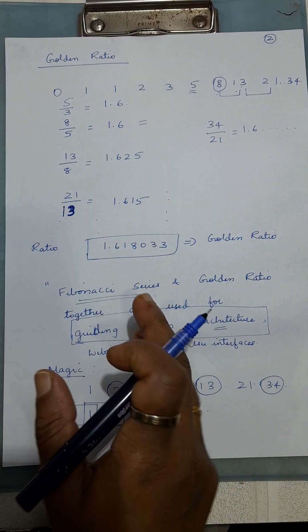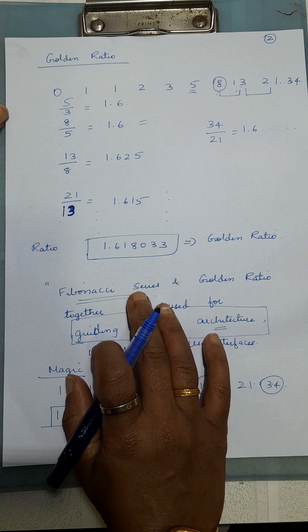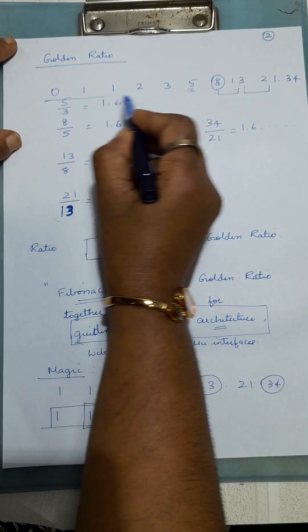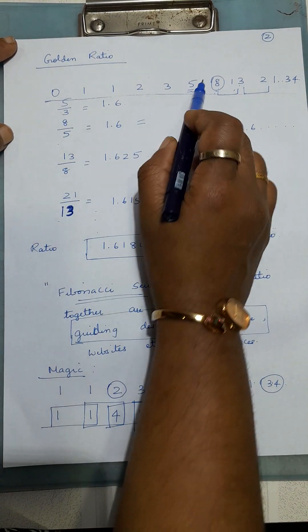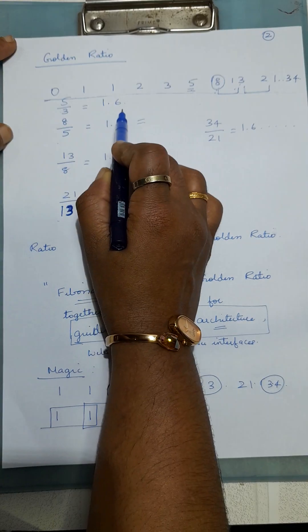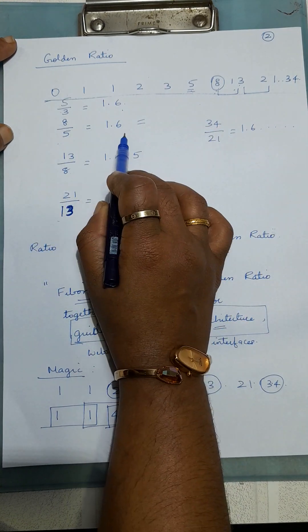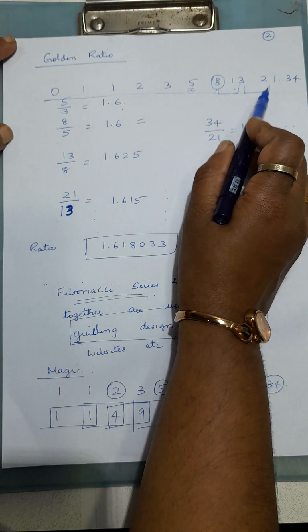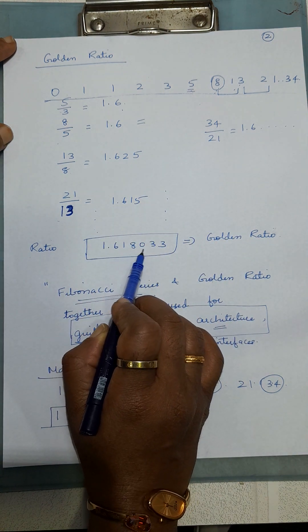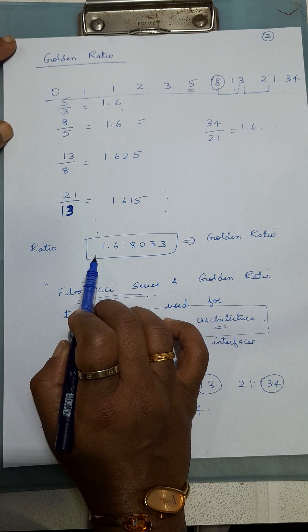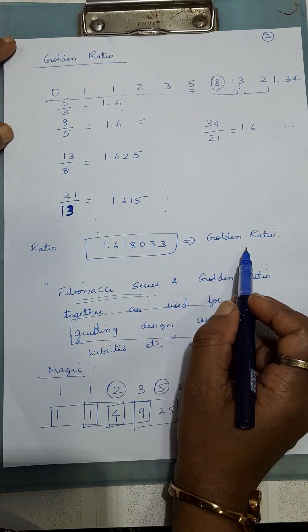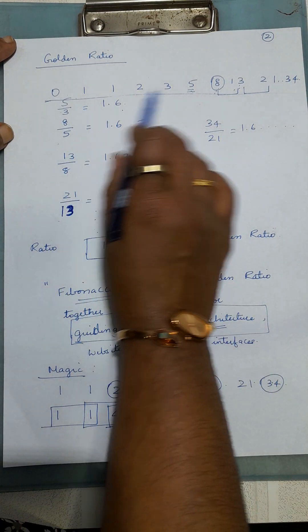In addition to Fibonacci series, we should know about the golden ratio to understand real-time examples. What is a golden ratio? Take a Fibonacci number, say 5, and divide by the previous number — you get 1.6. Then 8 divided by 5 is 1.6, 13 divided by 8 is 1.625, 21 divided by 13 is 1.615. As it goes on, it comes to approximately 1.618033. This ratio, obtained by dividing a Fibonacci number by the previous one, is considered the golden ratio.